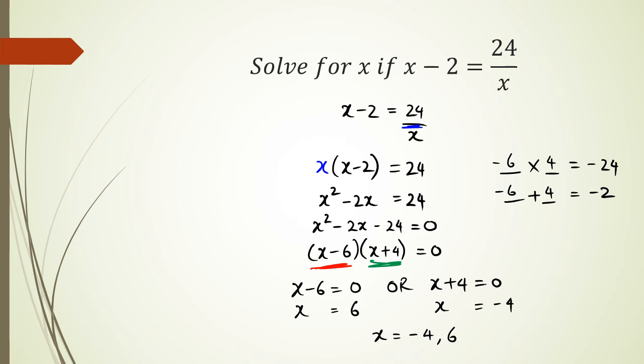So the other way that I was going to talk to you guys about in terms of rearranging this was this method here, x minus 2 equals 24 over x. So this is where if you want to get rid of the denominator, multiply every term by whatever is in the denominator. So in this case, I would multiply this by x, this by x, this term by x.